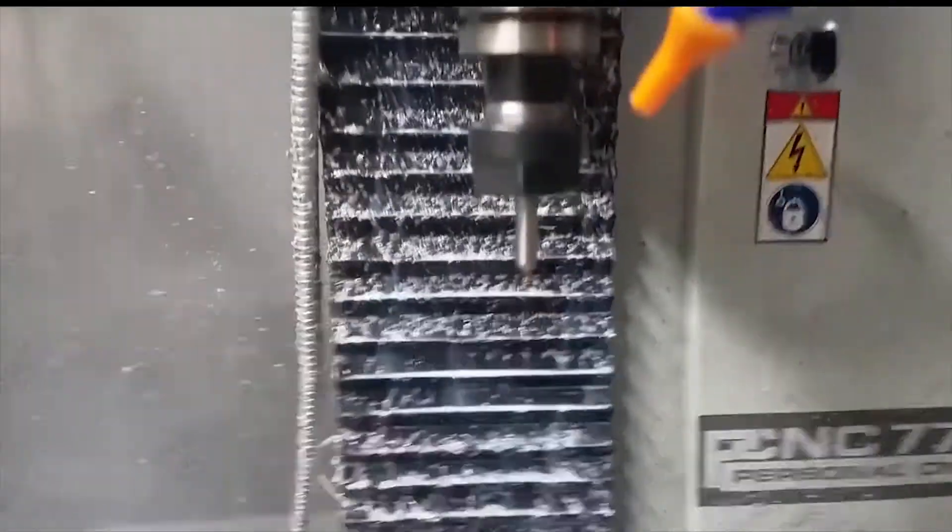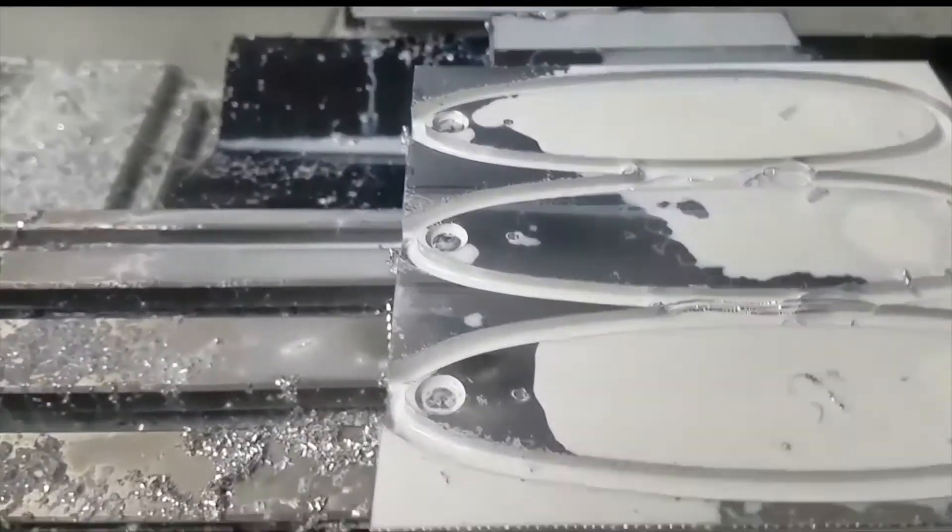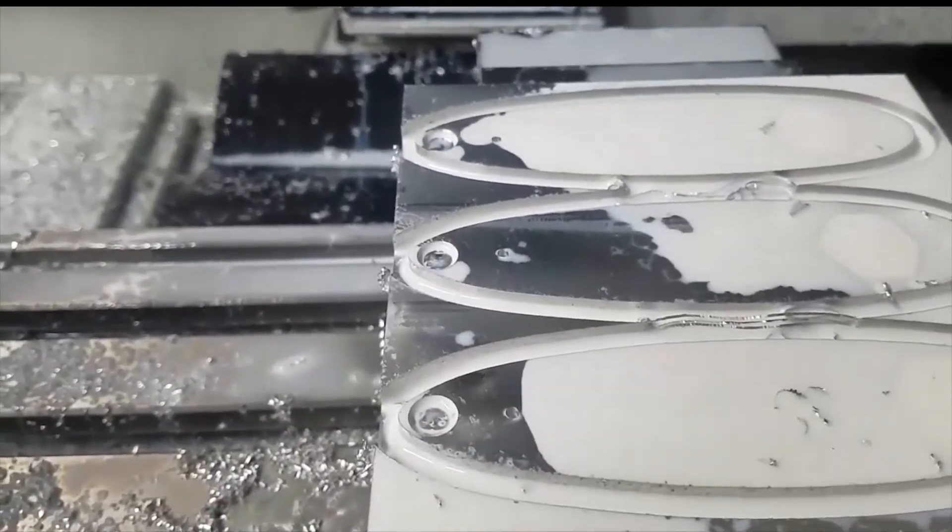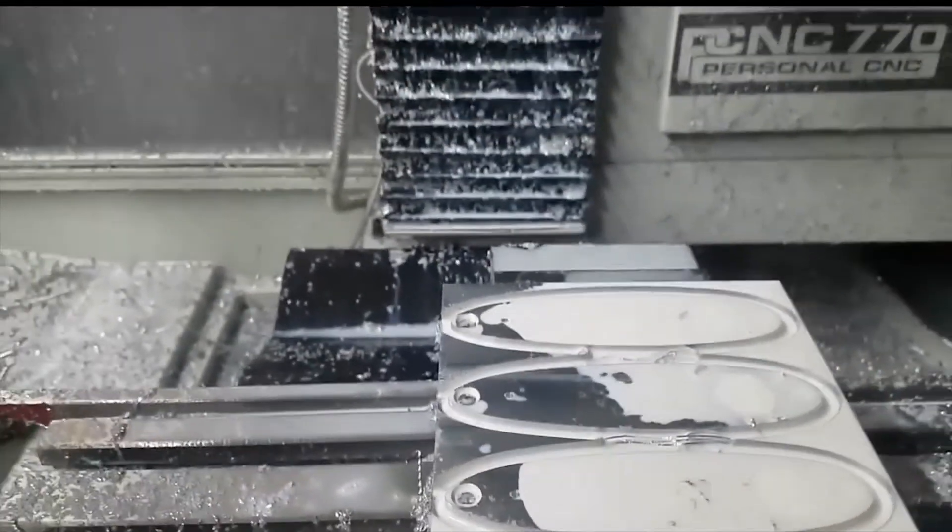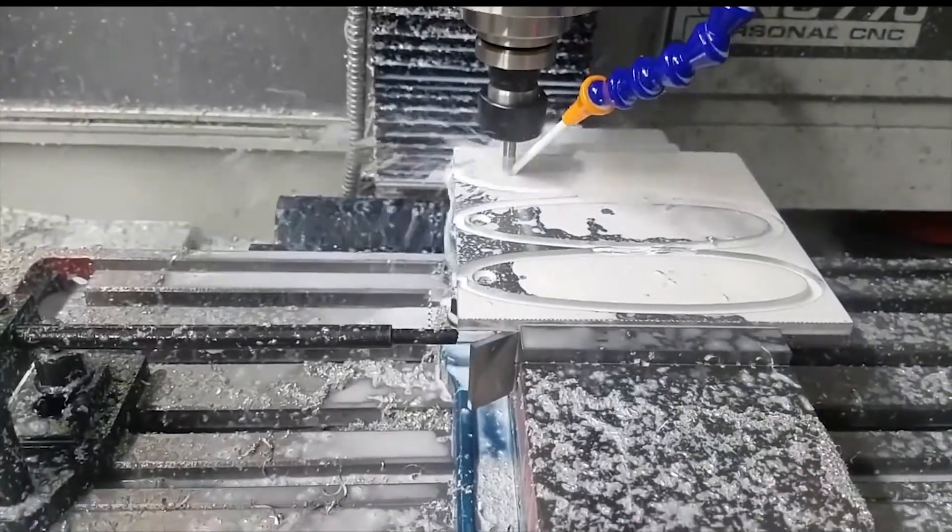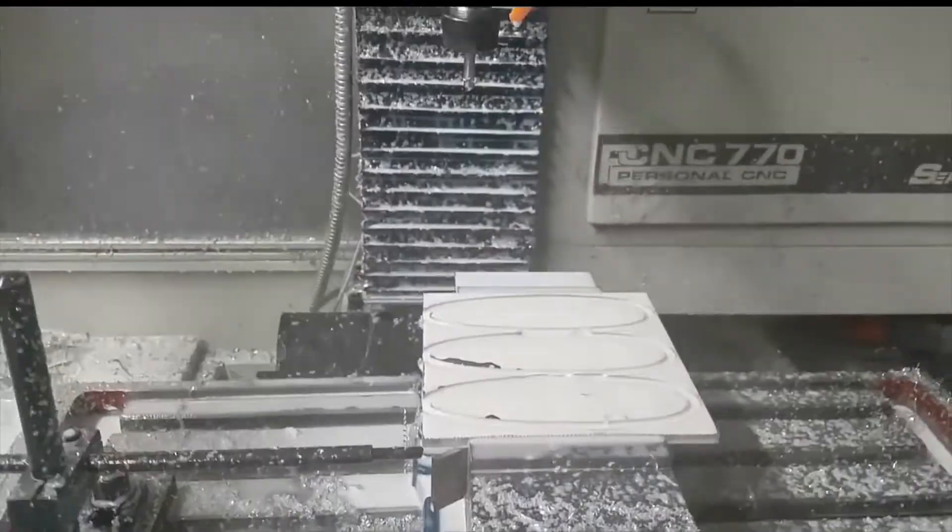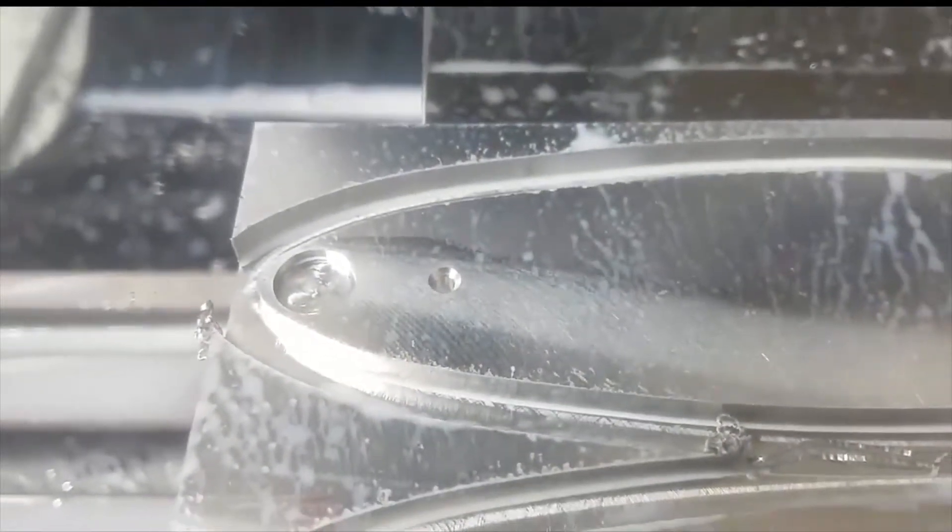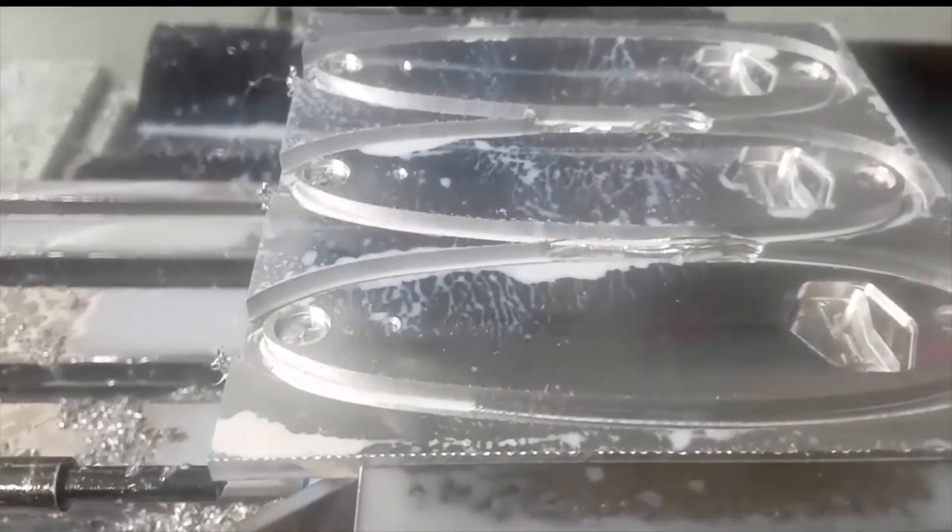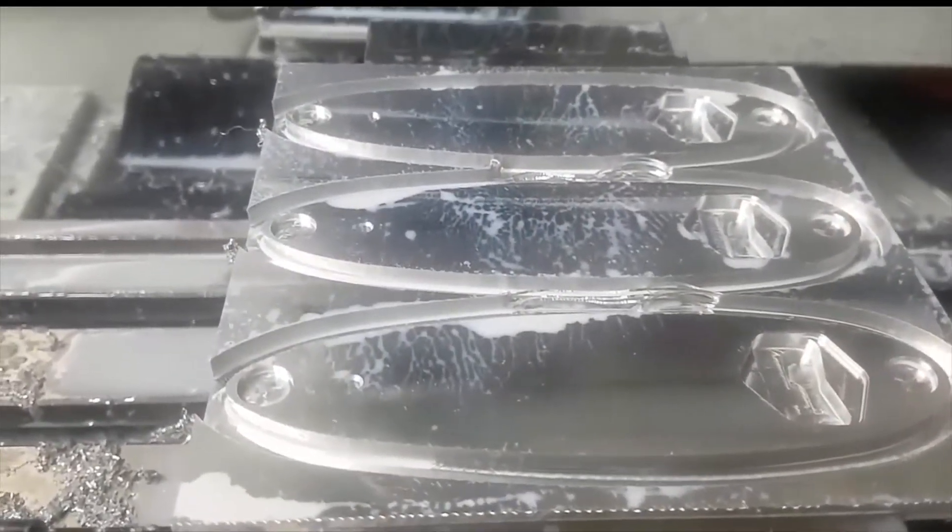The next operation is the countersink for the hole so that the countersunk screw fits nice and flush. The countersink is finished and we're ready to move on to the chamfer around the edge of the surfboard to get rid of all the burrs.